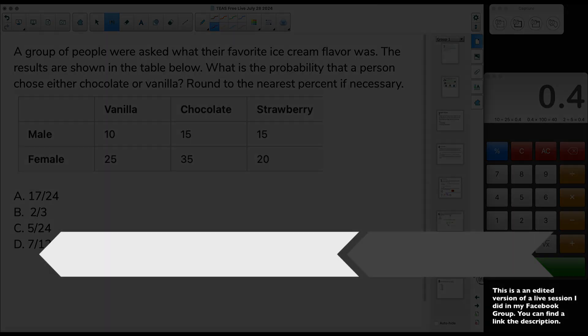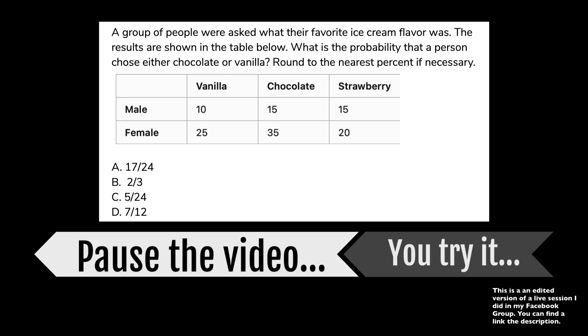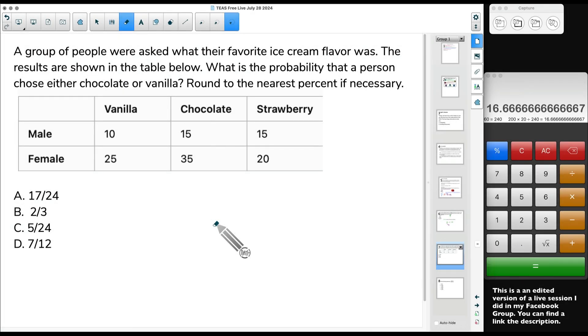This one is a little weird. You've got to read this chart or know how to read this chart. A group of people were asked what their favorite ice cream flavor was. The results are shown in the table below. What is the probability that a person chose either chocolate or vanilla? A person, it could be male or female, they either chose chocolate or vanilla. So we're talking about these right here. 10 males chose vanilla. 15 males chose chocolate. Are y'all seeing how I'm reading that chart? 15 males chose chocolate. But then we have 25 females chose vanilla and 35 females chose chocolate. It did not specify whether it be male or female.